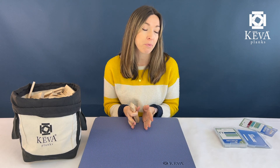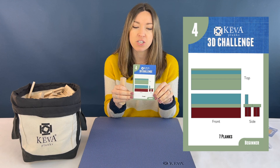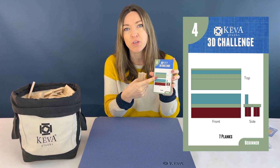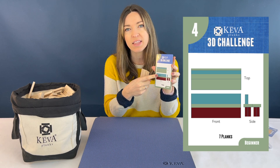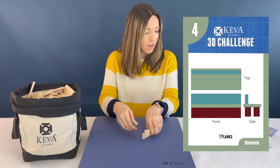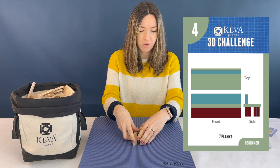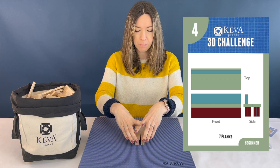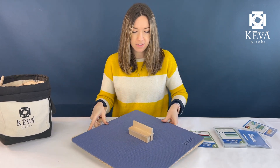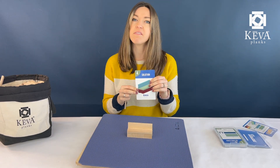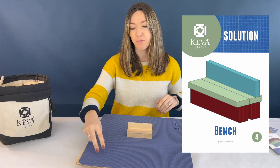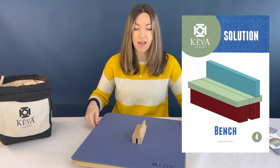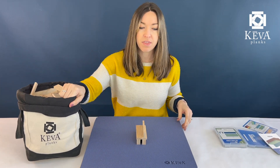A great exercise to start your students with is something we call the 3D Challenge. We have cards that show an object from three different views, and the challenge is for students to look at them, think spatially, and try to build that object with Kiva Planks. You look at the planks from the side, the front, and the top, and then once they've built it, they can check the other side to see if they built it correctly.